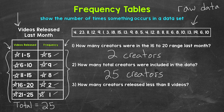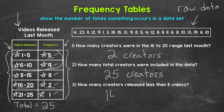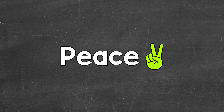Lastly, number 3: how many creators released less than 11 videos? Since 11 is not included, we look at the 1 to 5 and 6 to 10 groups. We have 5 creators and 9 creators. So 5 plus 9 gives us 14 creators who released less than 11 videos last month. There you have it — the basics of reading and understanding ungrouped and grouped frequency tables. I hope that helped. Thanks so much for watching. Until next time. Peace.